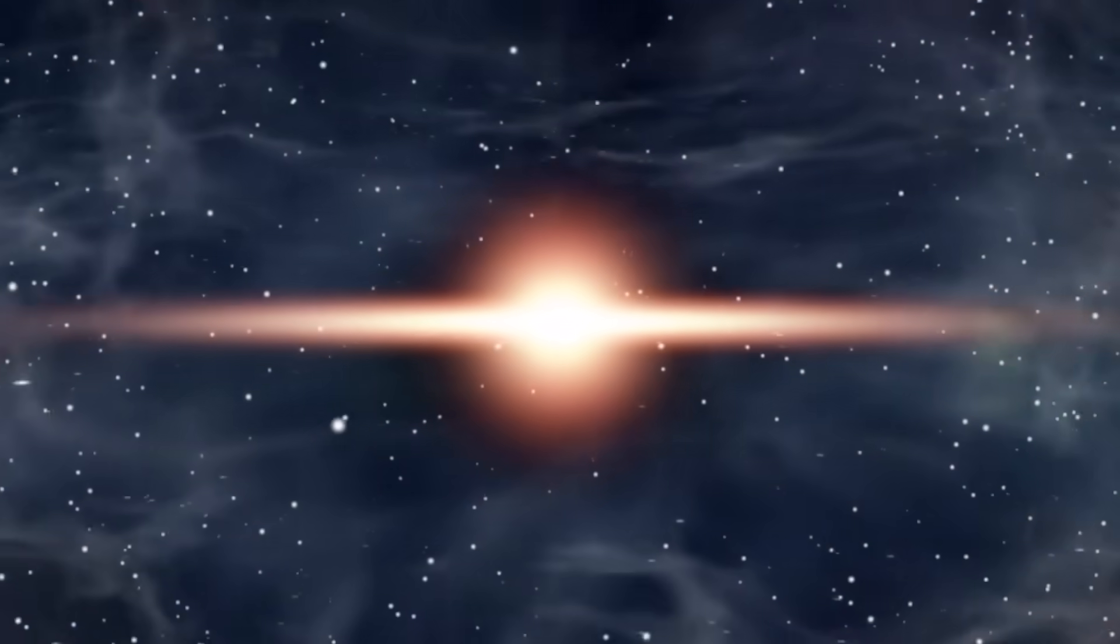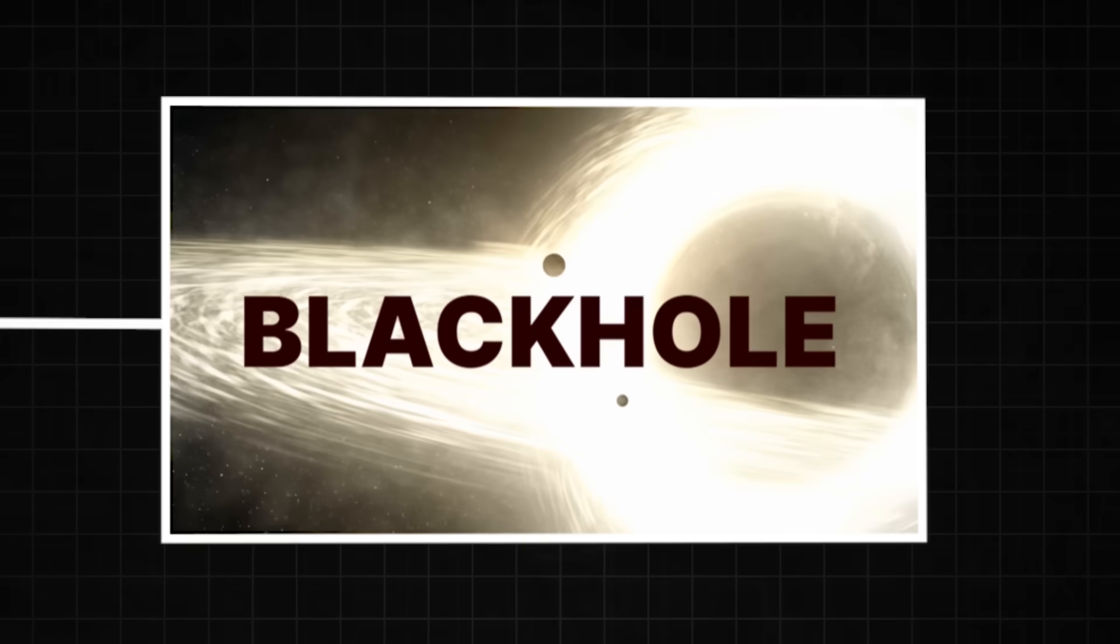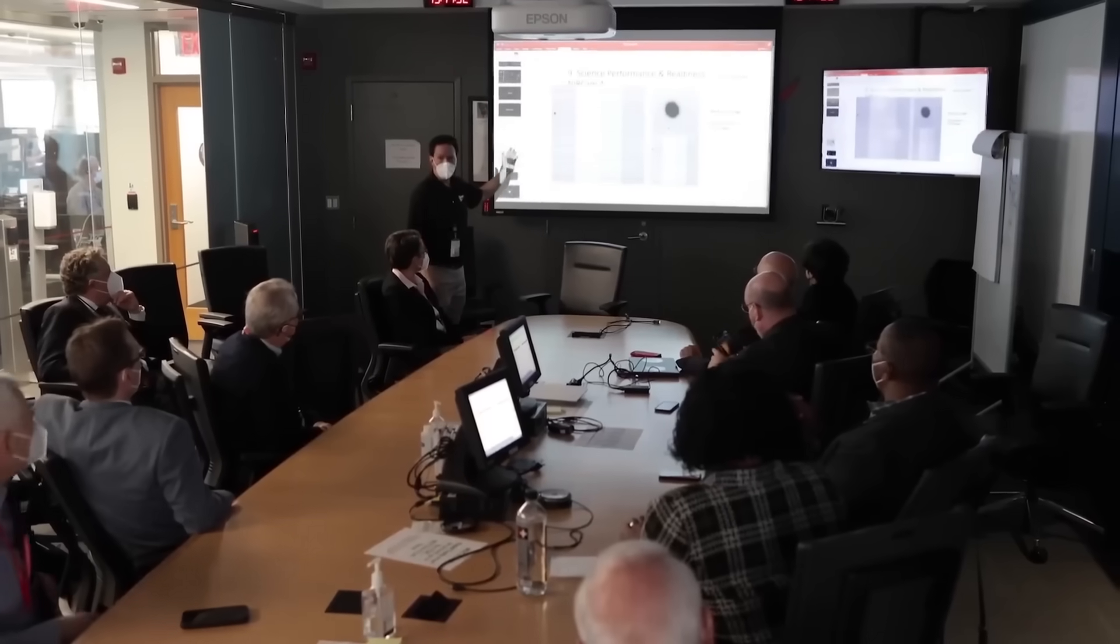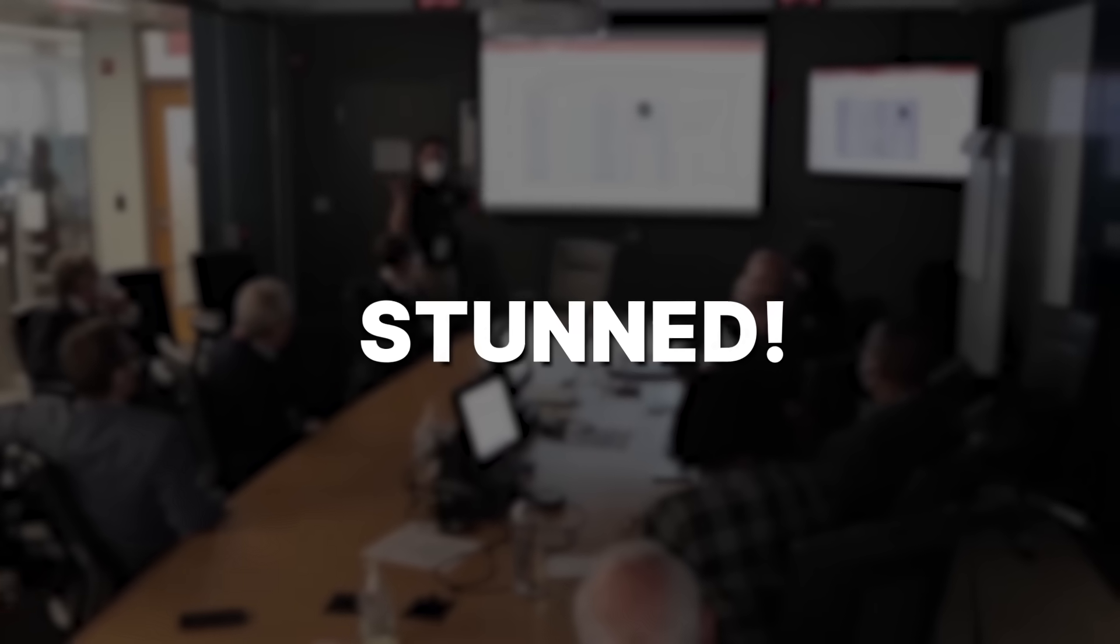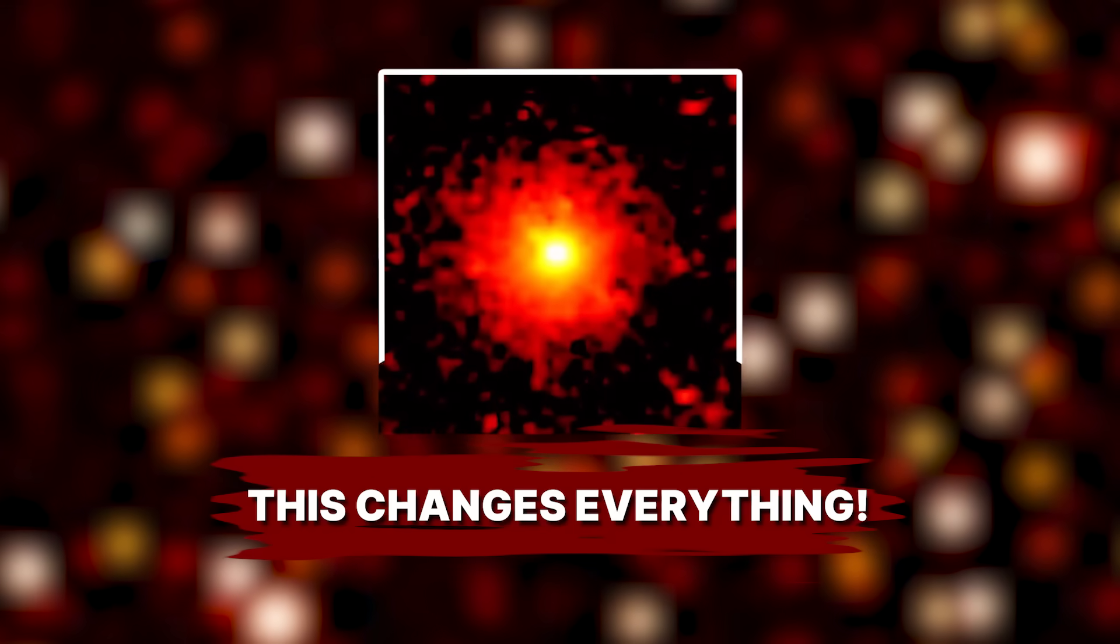A massive burst of energy erupts from a seemingly dormant object in our solar system. It's not a star going supernova nor is it a black hole feeding. It's a comet, three-eye Atlas, and it just did something that has left the scientific community stunned. It fired a nuclear pulse. To put it mildly, this changes everything.